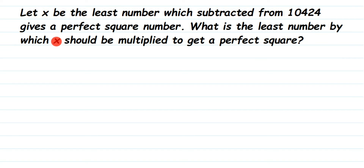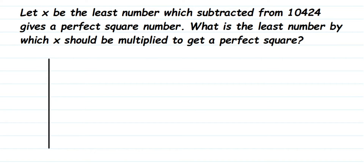First, we have to find the least number x such that when we subtract it from 10,424, the result is a perfect square. Then, with whatever x we get, we need to find what number to multiply x by to get a perfect square. Whenever you see a question about the smallest number to be subtracted or added, you have to use the long division method — the same method used to find square roots.